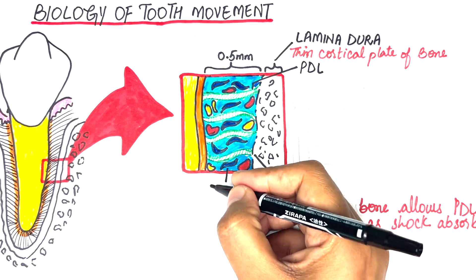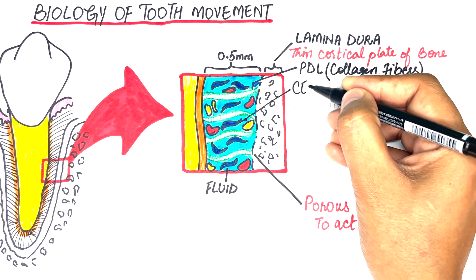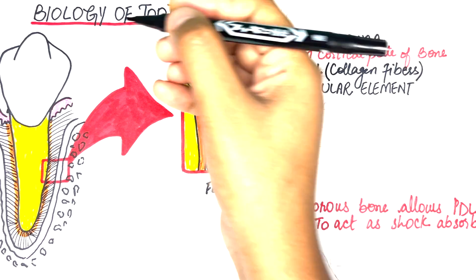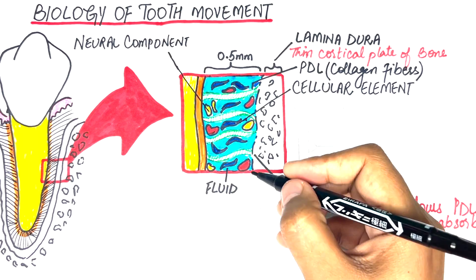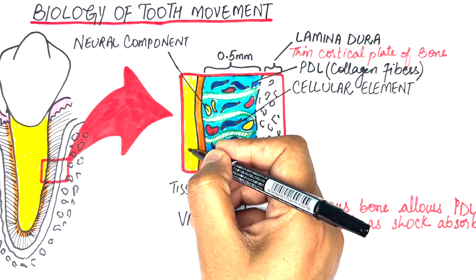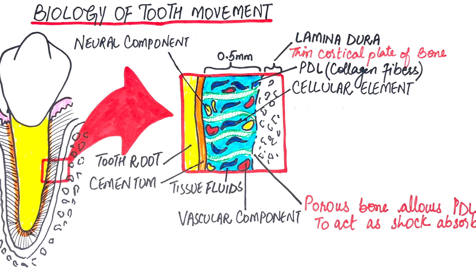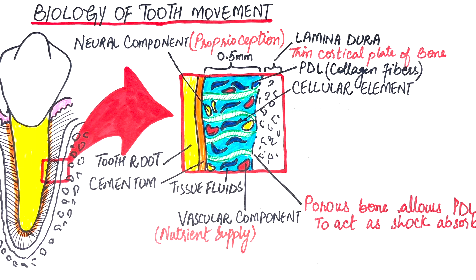The four main elements that reside in the PDL space are: the collagen fibers that make the PDL or periodontal ligament, the cellular elements, the neural and vascular components, and the tissue fluids. The collagen fiber bundles are a heavy fibrous supporting structure that joins the tooth to the laminar dura of the tooth socket, inserted on the root cementum on one side and into the laminar dura on the other. The cellular elements include the principal mesenchymal stem cells; the neural and vascular components help with proprioception and nutrient supply; and the tissue fluids are the same as blood plasma, in which all these structures swim.